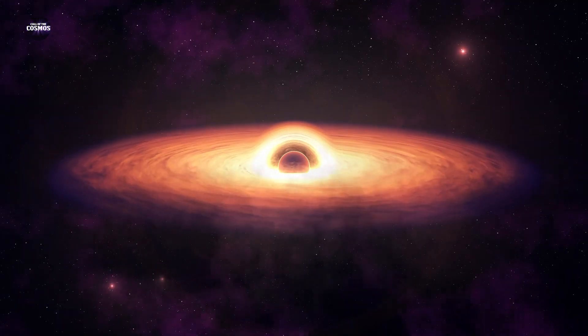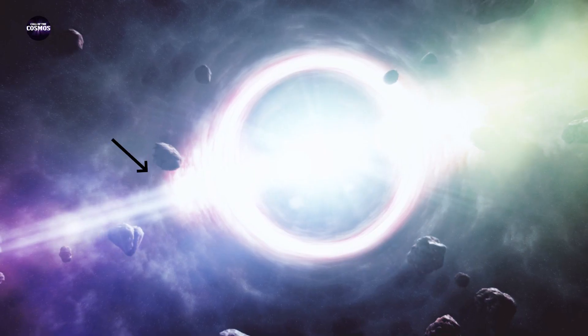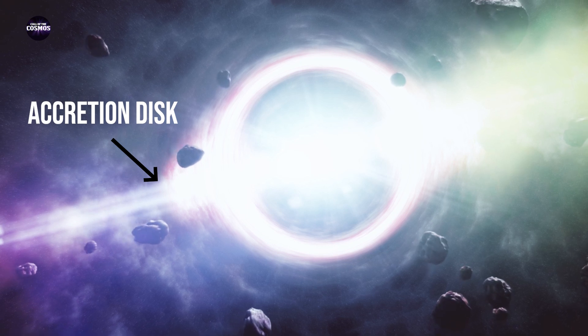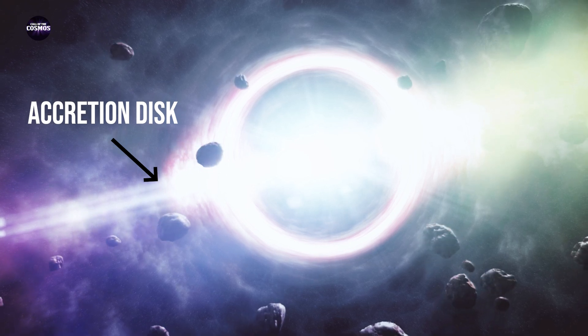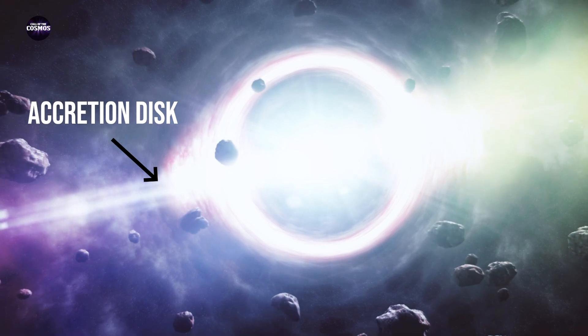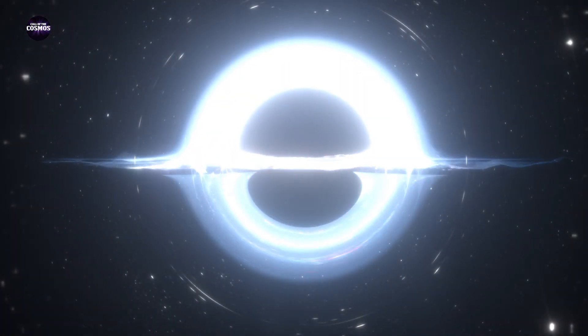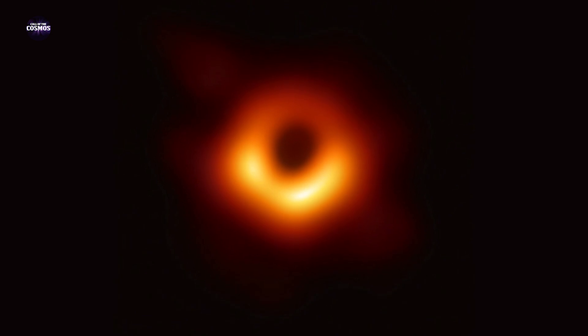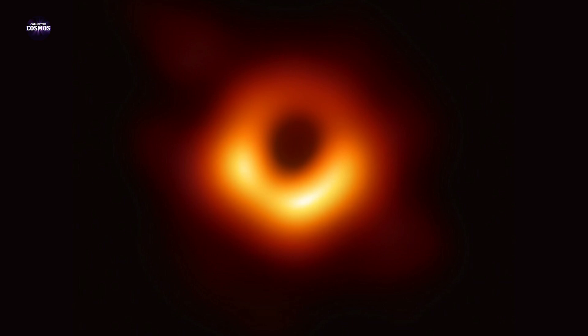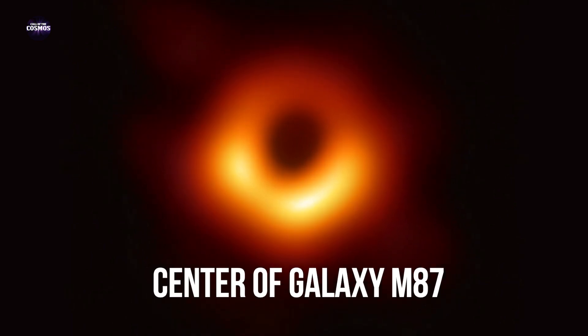But black holes aren't completely black. We can see a black hole by the accretion disk that surrounds it, which is a disk composed of all the gas and ripped apart stars the black hole is gobbling up. A good analogy of this would be water swirling down a drain. Back in 2019, we were able to get our first snap of a black hole using the Event Horizon telescope. This black hole was at the center of galaxy M87.